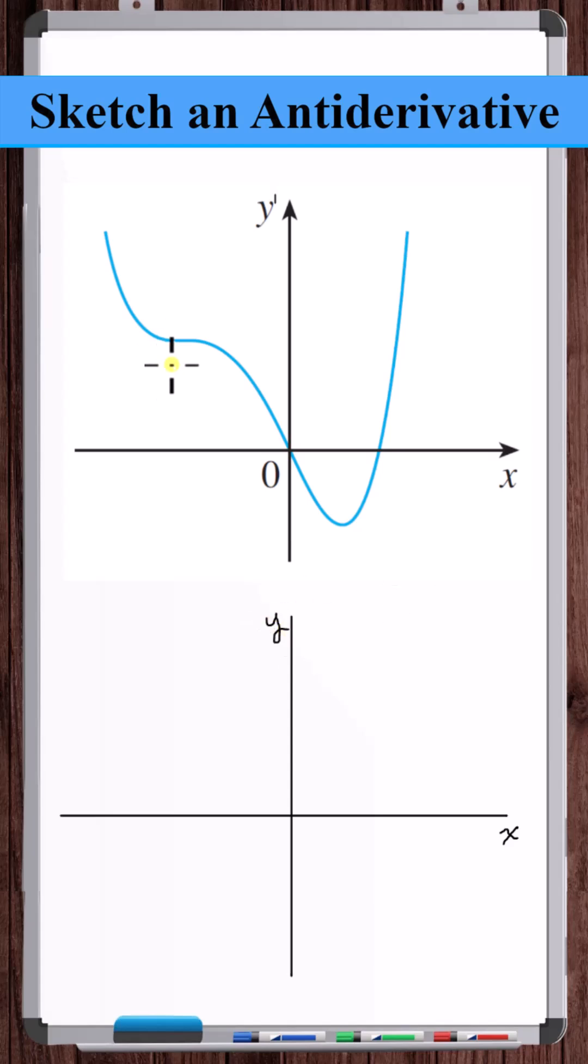So first, let's identify key points. At this point, the slope of the derivative curve is zero, at this point as well. At the origin and at this point, the slope of the antiderivative is going to be zero.